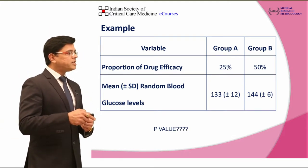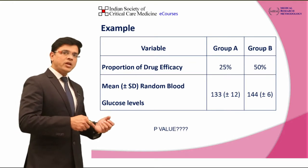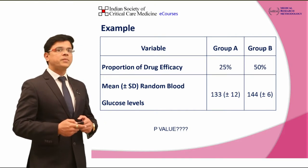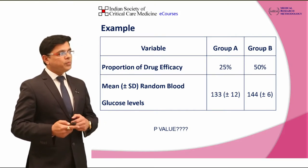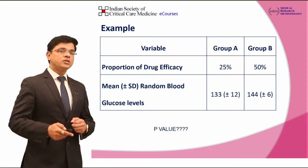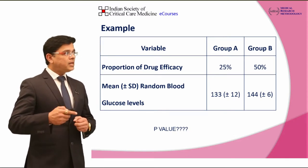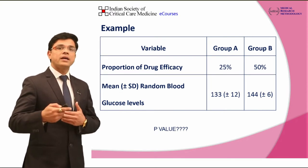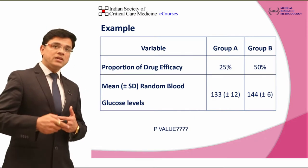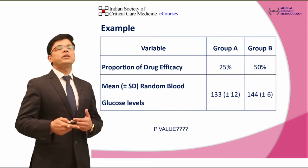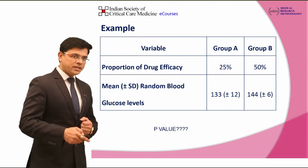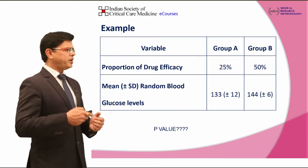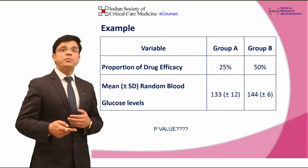Similarly, another example tells us about the mean and standard deviation of random blood glucose level: in group A it is 133 ± 12, and in group B it is 144 ± 6. We can clearly say that mean blood sugar levels are higher in group B, but whether this difference is statistically significant or not — to comment on that we need a common statistical test, and we comment by looking at the P value.